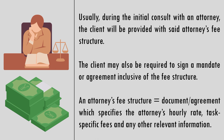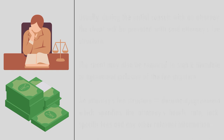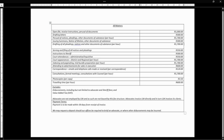An attorney's fee structure is set up on a document or in an agreement, and specifies the attorney's hourly rate, task-specific fees, and any other relevant information. For example, you'll see it has fees for drafting letters, issuing summons, drafting pleadings, instructions to sheriffs, and consultations — with a lot of hourly rate charges.